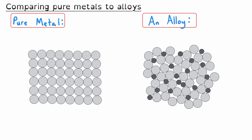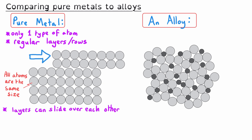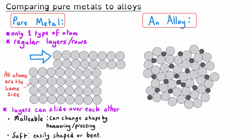To understand why pure metals have such different properties to the alloys we can make from them, we need to look at their structure. Pure metals have only one type of atom — that's what we mean by pure. As a result, these atoms are arranged in nice regular rows, because all of the atoms are the same size. Because these layers are so regular, if you were to hit them with a hammer or press them, you can change their shape. That's what malleable means — you can change their shape without breaking or cracking them.